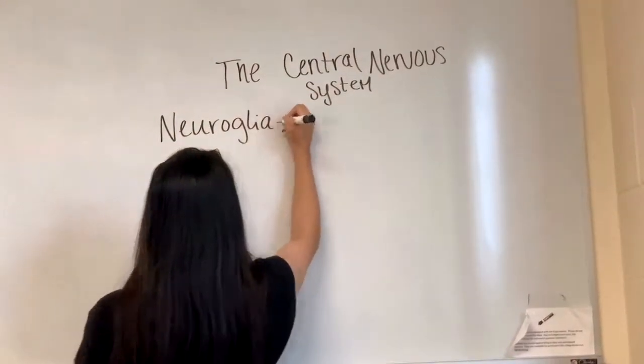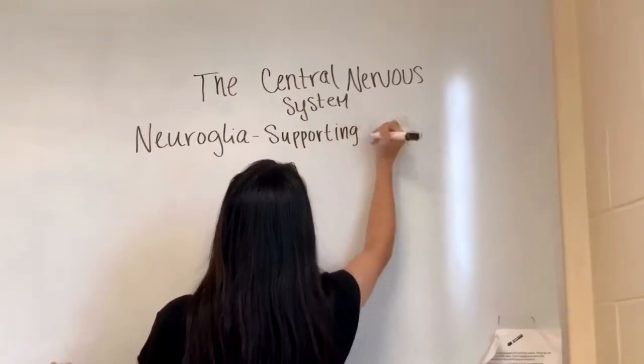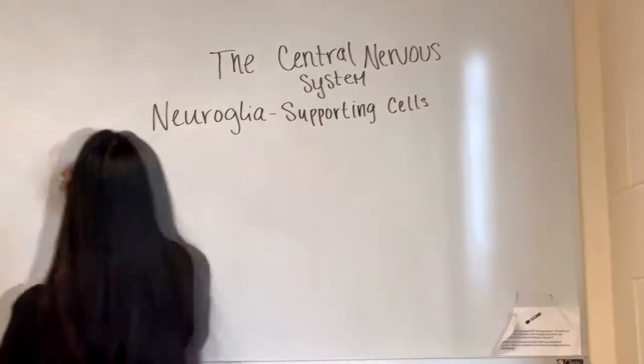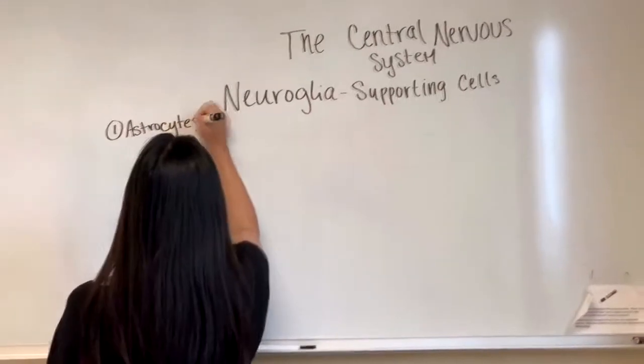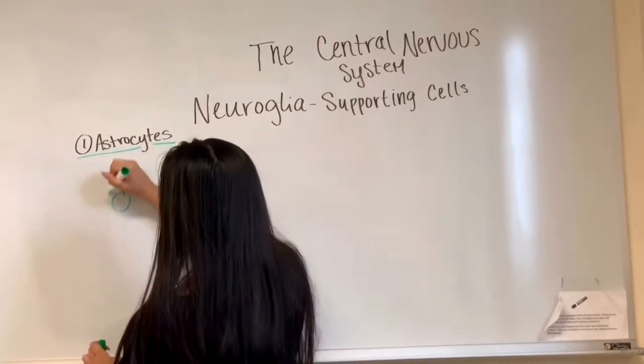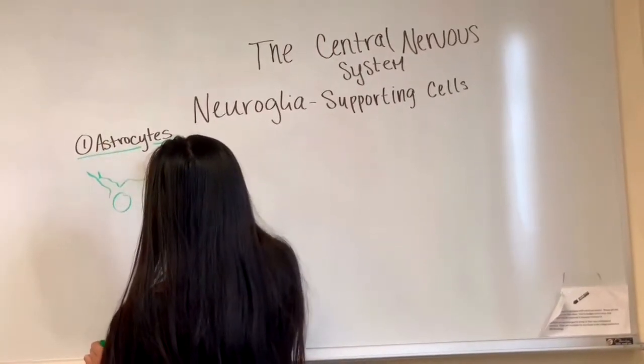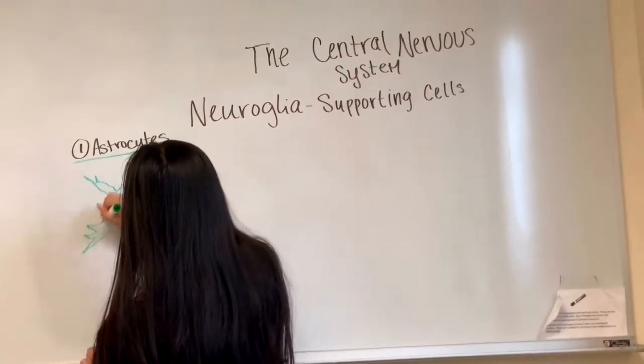In the nervous system, there are cells that help support neurons called neuroglia. Neuroglia are the smaller cells that are associated with the neurons. They are supporting cells that help neurons do their job. In the nervous system, there are four types. The first one is astrocytes. They are the most common type of glial cells and their process is linked to neurons that regulate the chemical environment. They respond to nerve impulses and release neurotransmitters.